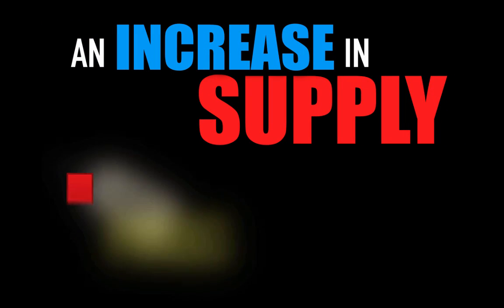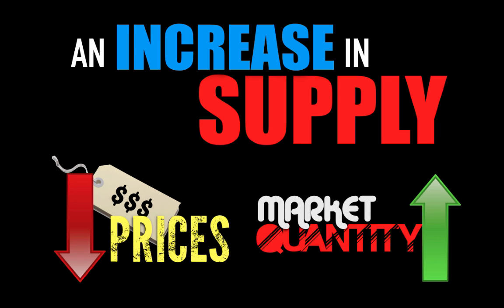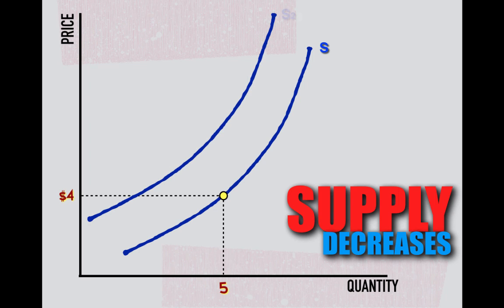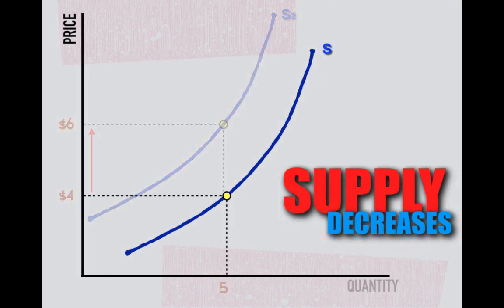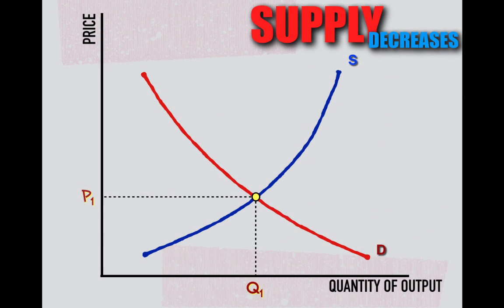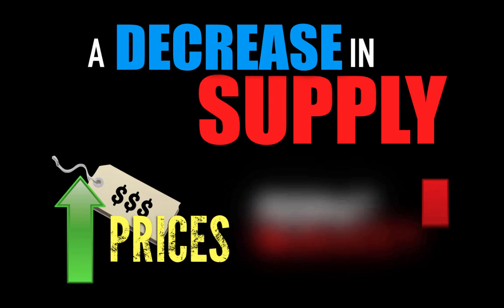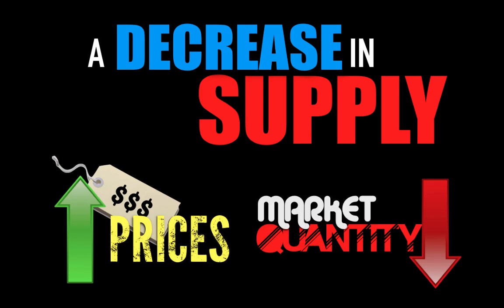An increase in supply in the marketplace causes product prices to decrease and quantity of output to increase. However, when supply fundamentally decreases, firms are less willing and able to supply the same quantity at every price level, or will only supply the same quantity at higher prices. In the market, a decrease in supply means the supply curve shifts to the left, and at a new equilibrium point with demand, we see the product price increase and the quantity of output decrease. A decrease in supply will cause product prices to increase and quantity of output in the market to decrease.